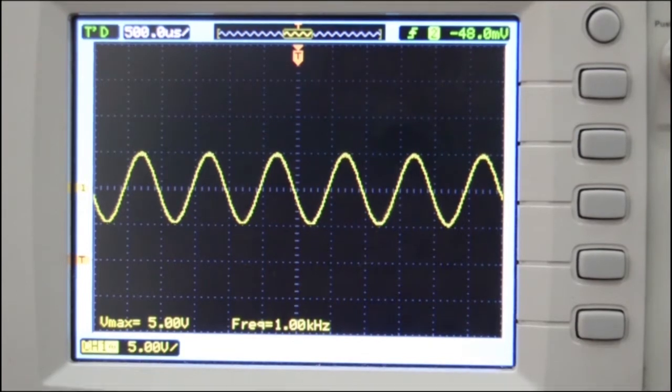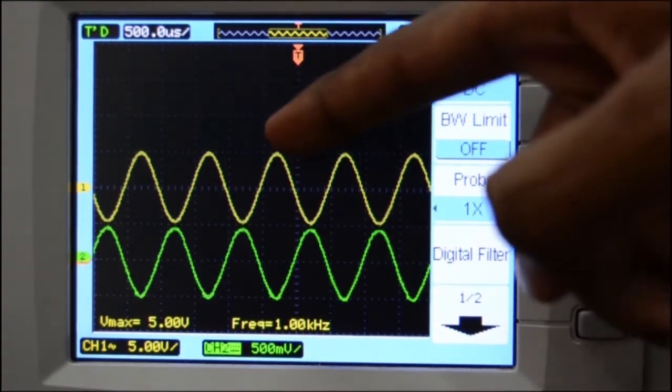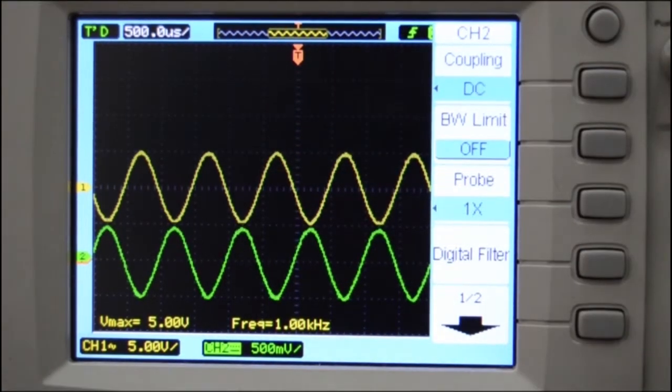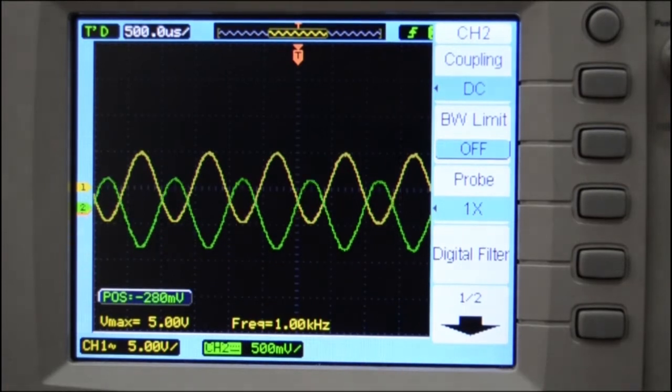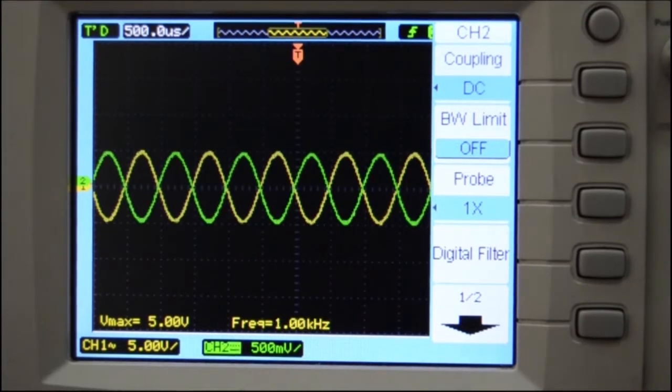For observing the inverting characteristics of the op-amp, we will connect the input to the second channel of the CRO. Now we can see that the input and output are 180 degrees out of phase. It's clear from the CRO that the input and output are 180 degrees out of phase.